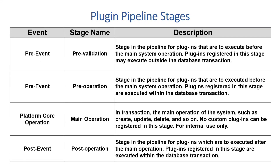Now let's discuss the plugin pipeline stages. The first stage is pre-validation, followed by pre-operation, then main operation, and finally post-operation. Pre-validation is the stage in the pipeline for plugins that execute before the main system operation.